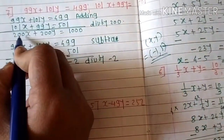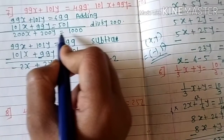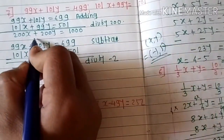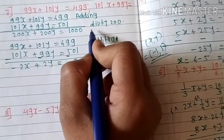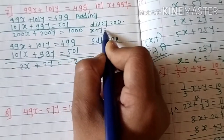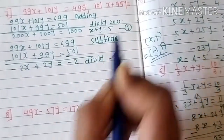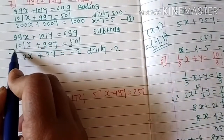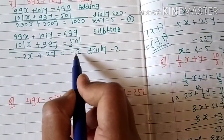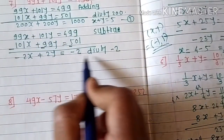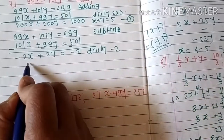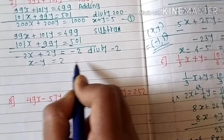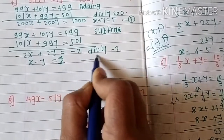Adding the two equations gives 200x plus 200y equals 1000. Dividing by 200 gives x plus y equals 5 — call this equation one. Taking subtraction gives minus 2x plus y equals minus 2, which is divisible by minus 2. Dividing gives x minus y equals 1 — call this equation two.